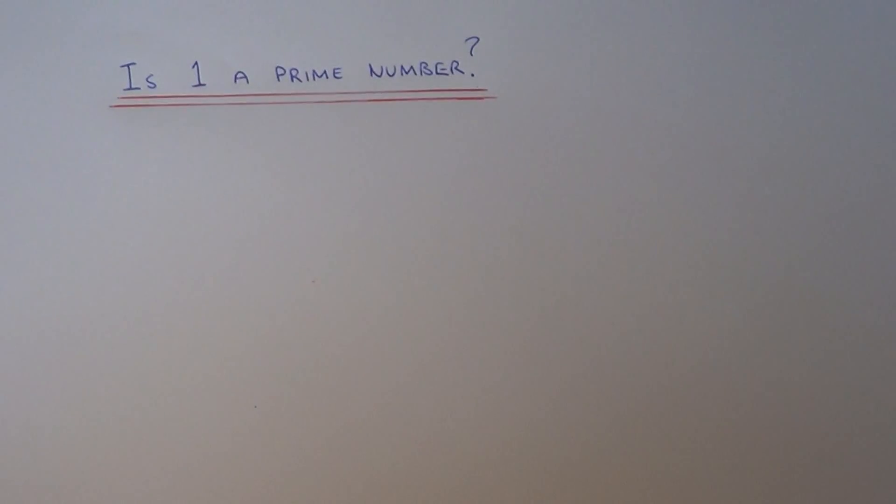A prime number can only be divided by 1 and itself. So in other words, it has to have exactly two factors.